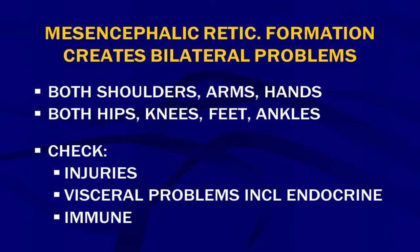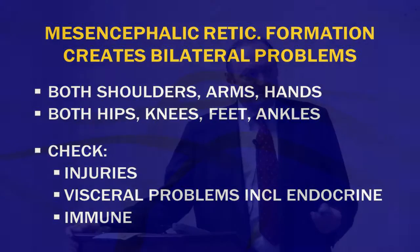We check for things like injuries, visceral problems including endocrine — as discussed in Brain on Fire 1 — and then immune problems. These are all things that can affect the mesencephalon.